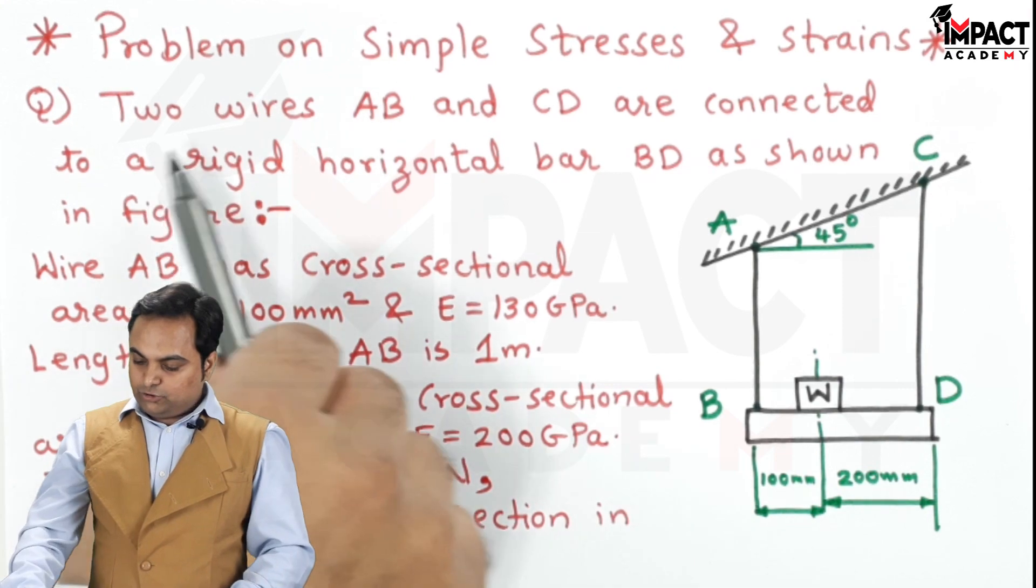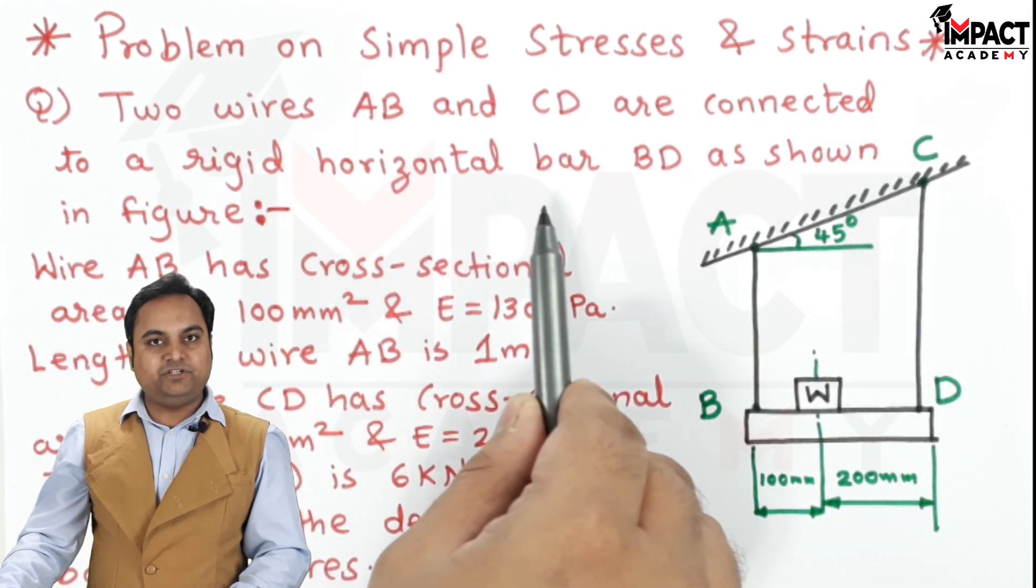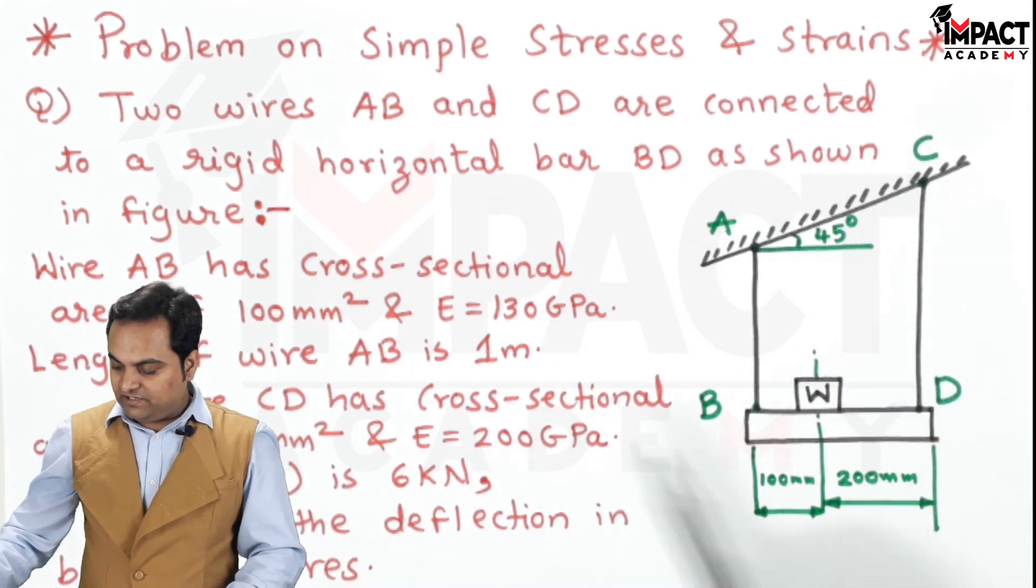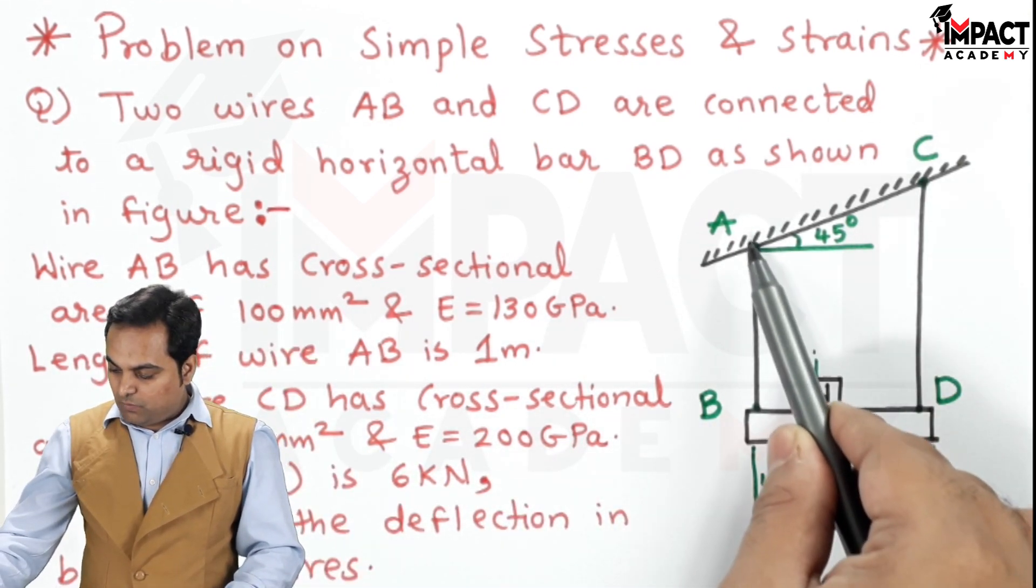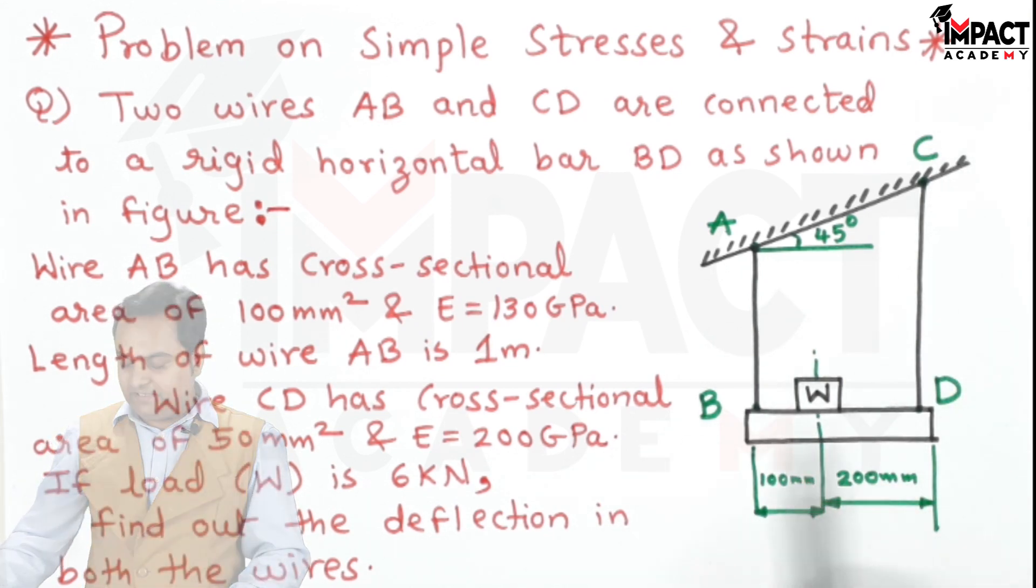Now it is given that two wires, capital AB and CD, are connected to a rigid horizontal bar BD. As shown in figure, the diagram is given. We can see there is a wire AB and then wire CD. Both are connected to a rigid bar BD.